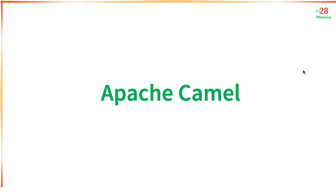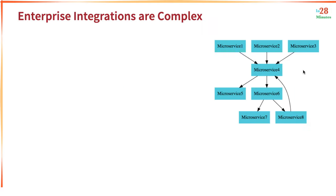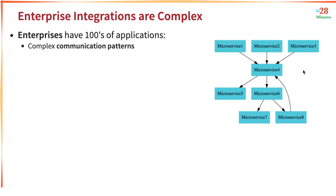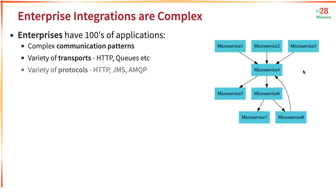Welcome back. In this step, let's get a 10,000 feet overview of Apache Camel. What is the problem that Apache Camel solves? Enterprise integrations are very complex. Whenever we talk about enterprises, they have hundreds — if not thousands — of applications. These applications have complex communication patterns and use a variety of transports like HTTP and queues, and a variety of protocols like HTTP, JMS, and MQTT.